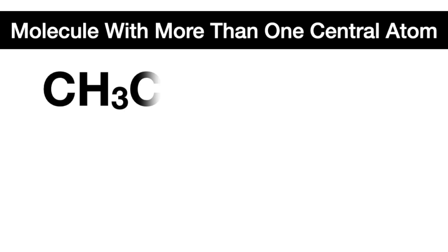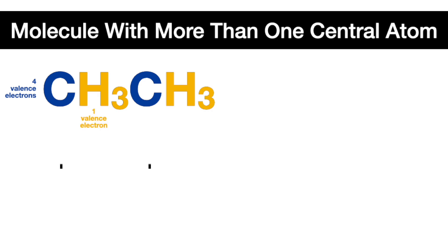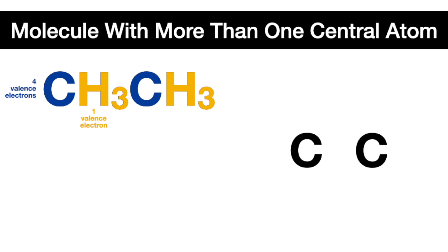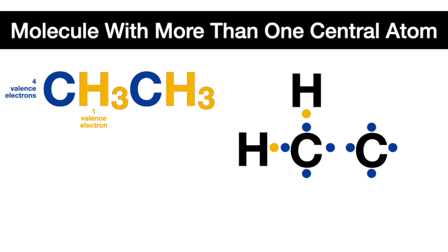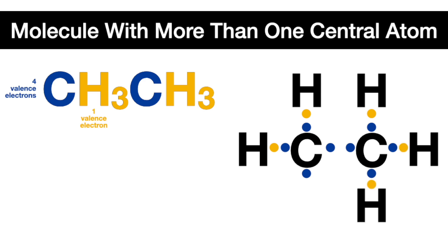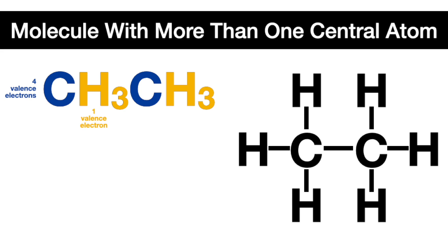Now let's draw a Lewis dot structure for a molecule with more than one central atom. In this molecule, we have two carbons each with four valence electrons, and six hydrogens each with one valence electron. There are two carbons, each with a subscript of one, so there are going to be two central atoms. Start by drawing both central atoms and surround each of the carbons with their four valence electrons. Then draw the six hydrogens near each of the single electrons on both the carbons, and there you have it — bonds will form between the carbons and the hydrogens surrounding them. Here's the Lewis dot structure and the molecular bond structure.